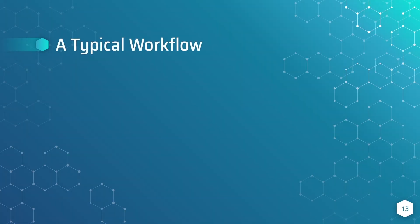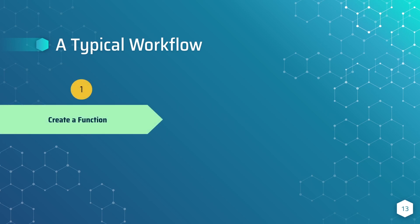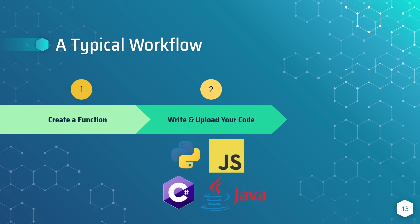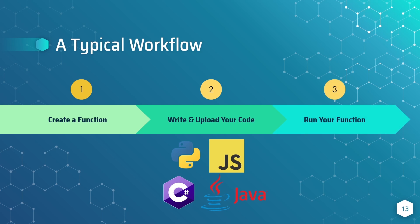What does a typical workflow with AWS Lambda look like? The first step is creating your function — through the console, infrastructure as code, or the command line interface. Second, you write and upload your code. There are many programming language options: Python, JavaScript, C#, Java, Go, Ruby, and more. Third is deploying and running your function. You can invoke it directly, link it to an API, or link it to an event processor — all things we'll see in later sections of this course.